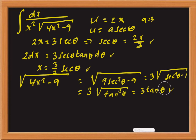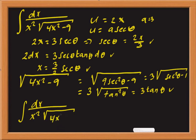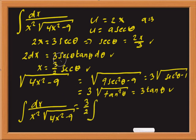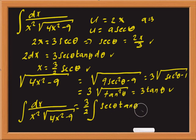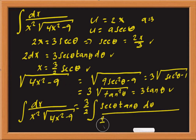We have all the ingredients, so we plug into the original integral of dx over x squared times the square root of 4x squared minus 9. We substitute dx as 3 halves secant theta tangent theta d theta. In the denominator, x squared becomes 9 fourths secant squared theta, and the square root term becomes 3 tangent theta.